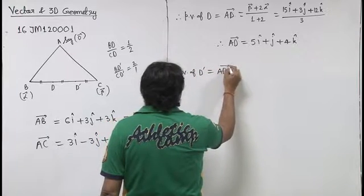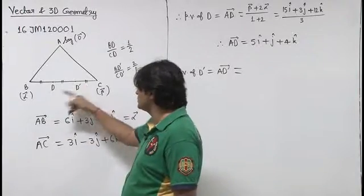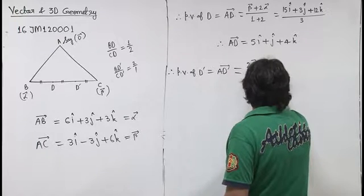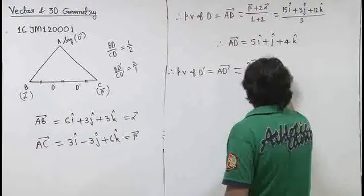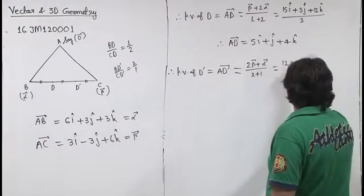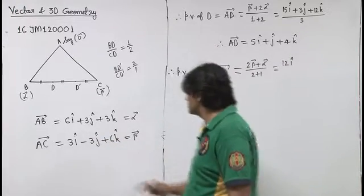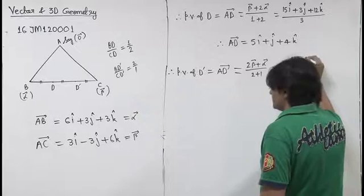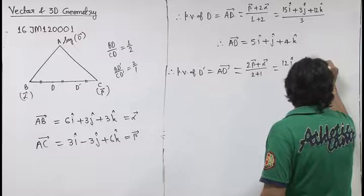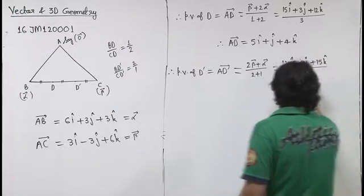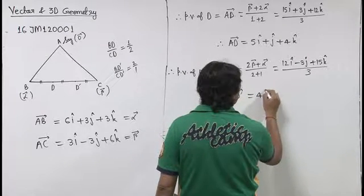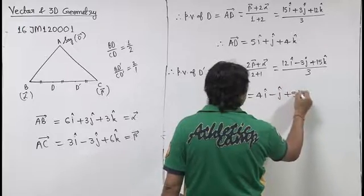Similarly, position vector of D dash, that is vector AD dash, here we have 2 is to 1, so 2 into beta plus 1 into alpha upon 2 plus 1. This is 12i cap minus 3j cap and 15k cap upon 3. That means AD dash vector is 4i cap minus j cap plus 5k cap.